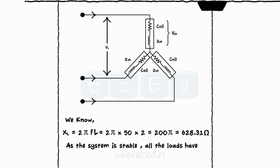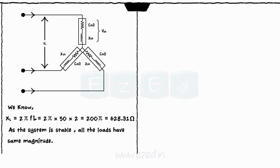As the system is stable, all the impedances are same and equal to ZPH. Thus, ZPH equals R plus JXL equals 40 plus J629.58 ohms.